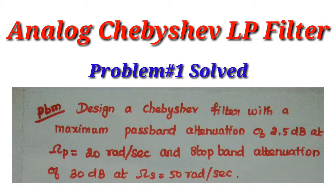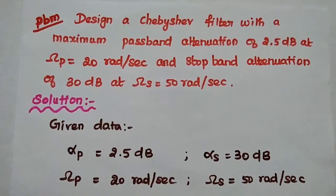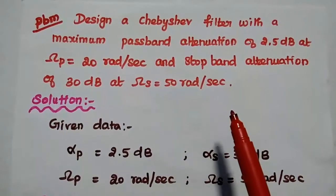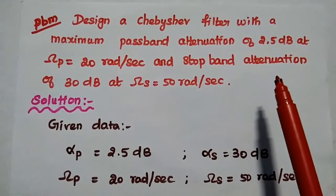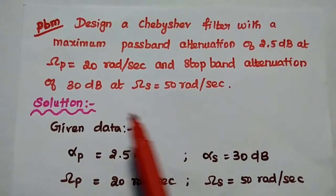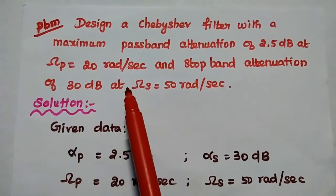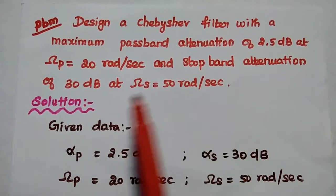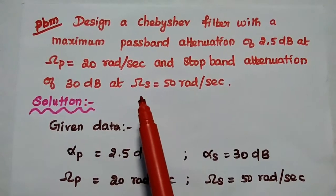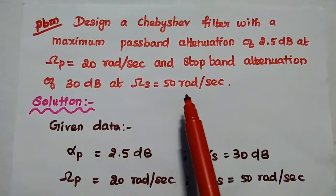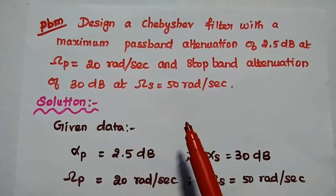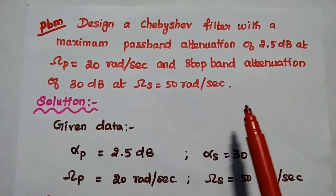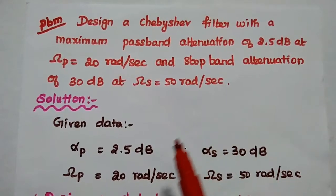We are going to solve an important problem on an analog type 1 Chebyshev low pass filter. Design a Chebyshev filter with a maximum passband attenuation of 2.5 dB and omega_P equal to 20 radian per second, and stopband attenuation of 30 dB at omega_S equal to 50 radian per second. We are going to design a Chebyshev type 1 filter for the given specifications.